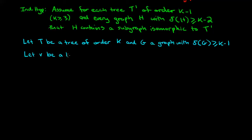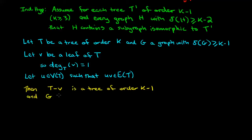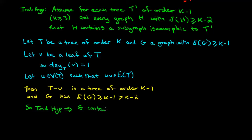Let v be a leaf of the tree t — we know there are always at least two leaves — so the degree of v in t is one. Let u be the vertex in t such that u and v are adjacent. Then t minus v is a tree of order k minus one, and g has minimum degree at least k minus one, which is greater than k minus two. So we can apply the inductive hypothesis with the tree t minus v and the graph g as our graph h, giving us that g contains a subgraph f isomorphic to t minus v.